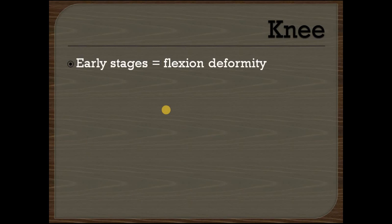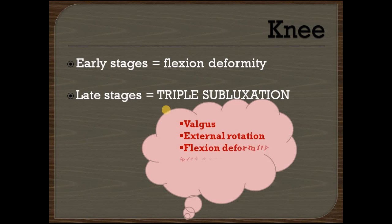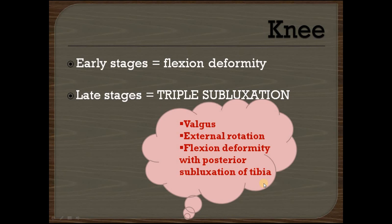Deformity of the knee: in the early stages there is flexion deformity of the knee. As rheumatoid arthritis progresses in late stages, triple subluxation of the knee occurs. Triple subluxation means valgus deformity, external rotation, and flexion deformity with posterior subluxation of the tibia — three deformities together present in the knee.